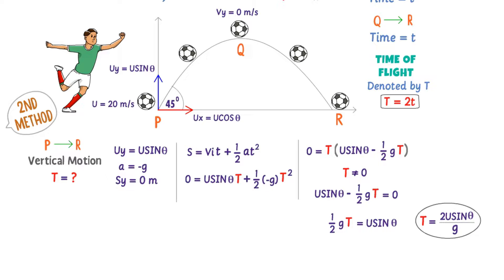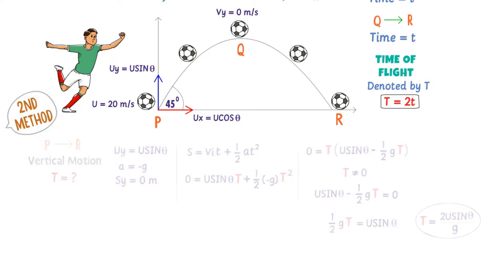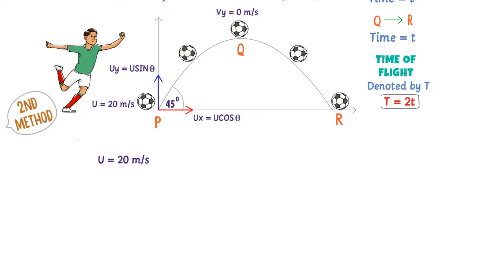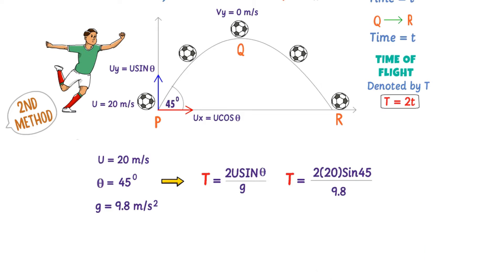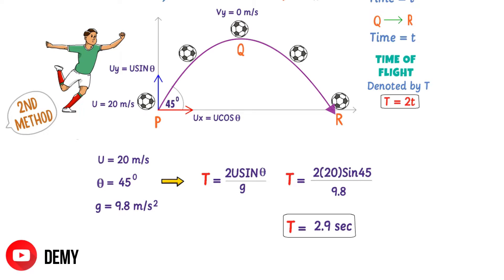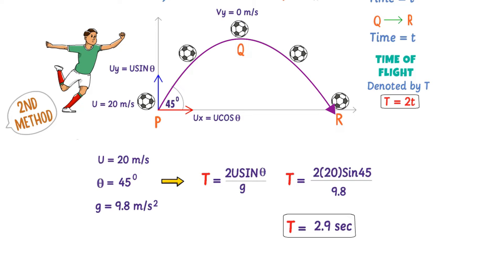Let me use this equation to calculate the time of flight. The initial velocity is u = 20 m/s, the angle of projection is 45°, and g = 9.8 m/s². Using T = 2u sin θ / g and plugging in all values, we get T = 2.9 seconds. So the ball takes 2.9 seconds to move from P to R when thrown with an initial velocity of 20 m/s at an angle of 45°. I hope you have understood the concept of time of flight in projectile motion.